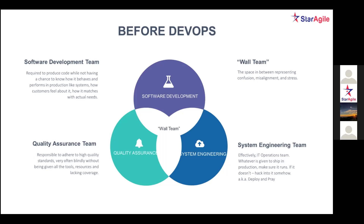This team would consist of developers, testers, database administrators, people from an Agile background like Scrum Masters, and a release manager. This team is central to all phases of software development — a core team through which each and every project passes. Each team communicates with the DevOps team, every project passes through it, and it's the core of software development. For any organization, the DevOps team is the central team communicating to all stakeholders.